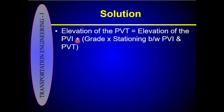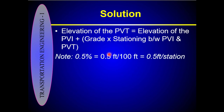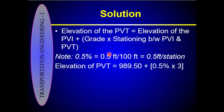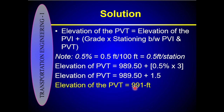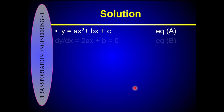Similarly, the elevation of the PVT equals the elevation of the PVI plus G2 multiplied by the distance between PVI and PVT. The elevation of the PVI is 989.5 feet. G2 is positive 0.5%, meaning the road goes upward, and the distance between PVI and PVT is 300 feet. Therefore, the elevation of the PVT is 989.5 + (0.5)(300/100) = 991 feet.